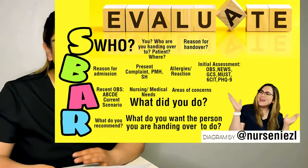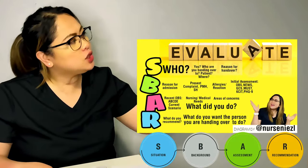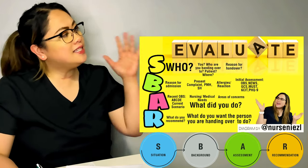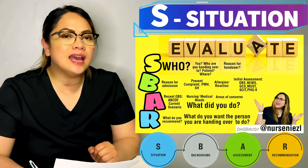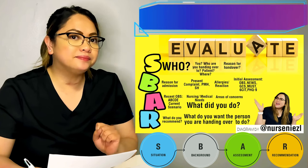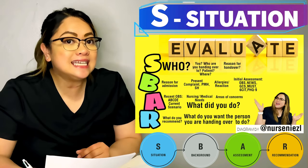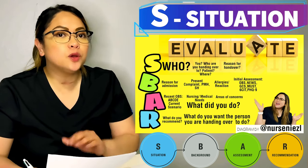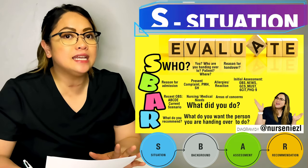So here in the UK, we follow the SBAR when we are handing over. What is SBAR? Situation, Background, Assessment, and Recommendation. This is the structure I made in order to pass the OSCE exam. For the Situation, I only remember the word 'who.' Who are you? You are the nurse handing over the patient. Who are you talking to? Another 'who' is your patient details. I also included 'where' because you need to state where you are right now — in this example, we are in the cardiology ward. As part of the situation is also the reason for handing over the patient.